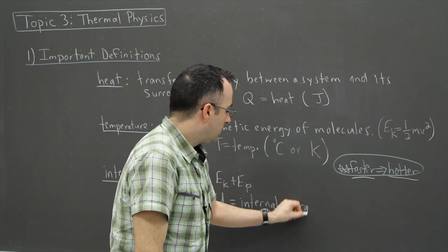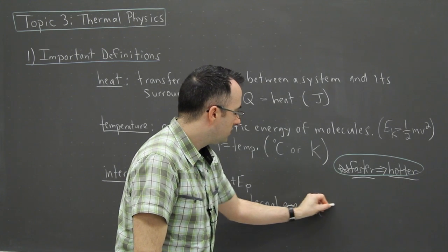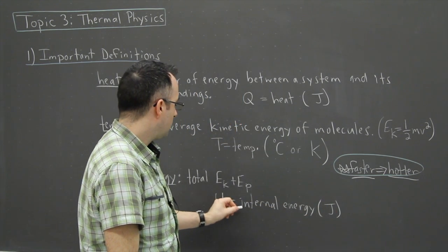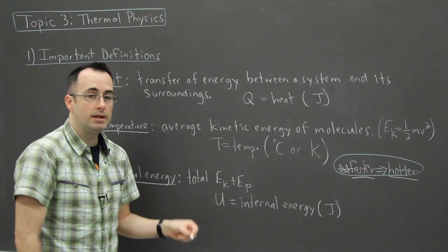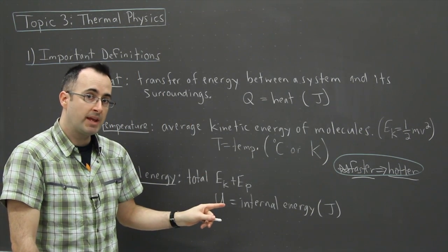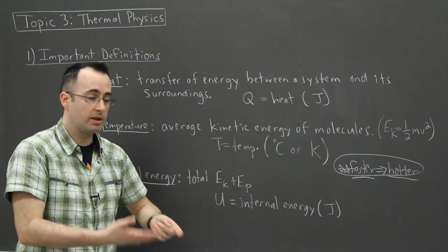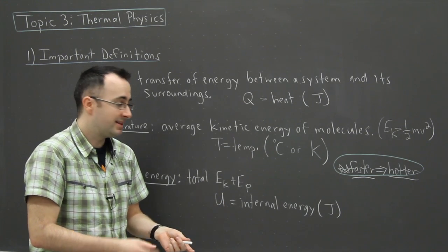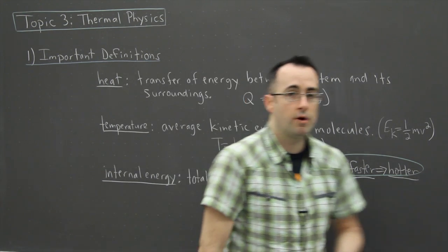And in fact, we use the letter U for that. So U is going to be the internal energy. And it's measured in joules. Because energy always seems to be measured in joules. So these are the key things here. There's heat, there's temperature, and there's internal energy. And those things come up a lot within the thermal physics unit. And they're very important definitions. These are key to our understanding of what actually goes on.